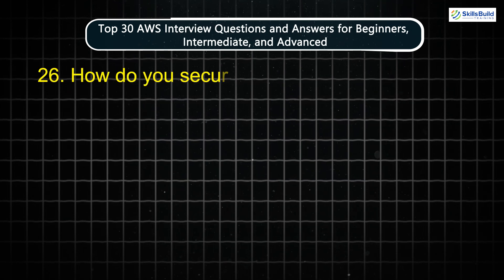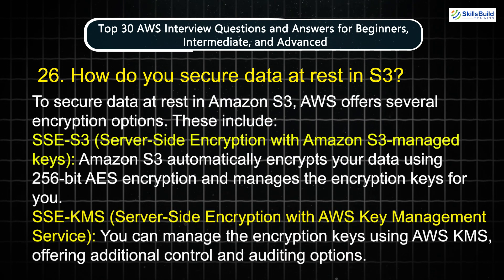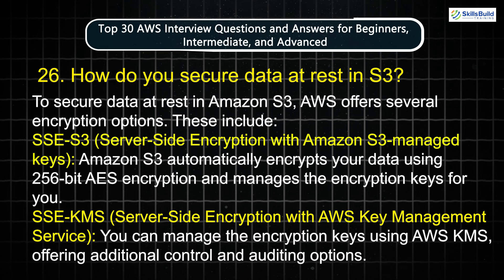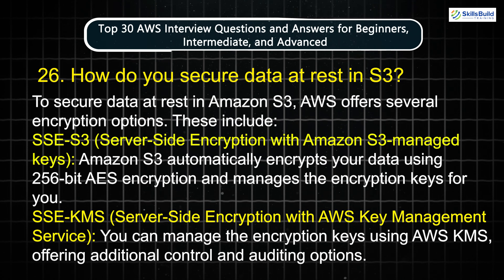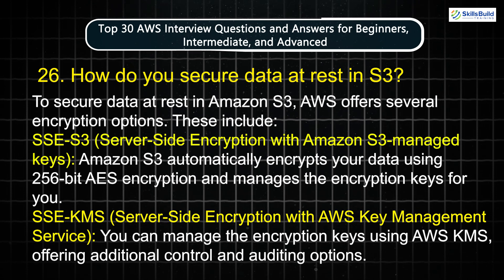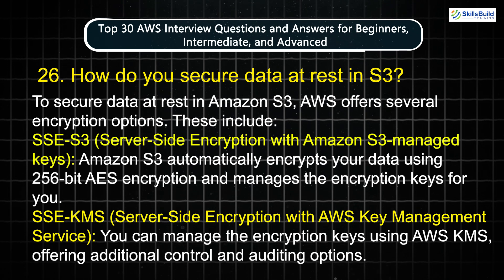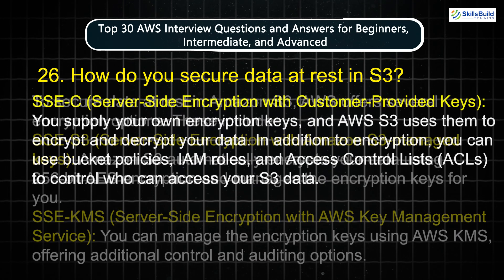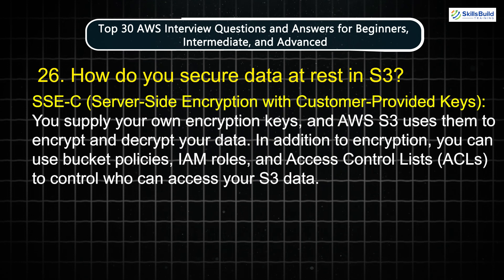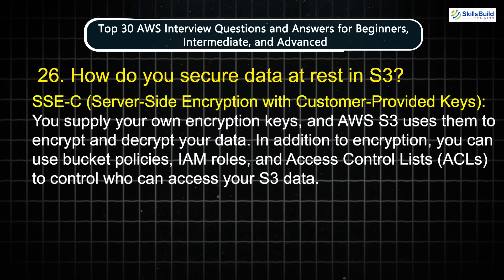Question 26: How do you secure data at rest in S3? To secure data at rest in Amazon S3, AWS offers several encryption options. These include SSE-S3, server-side encryption with Amazon S3 managed keys, where Amazon S3 automatically encrypts your data using 256-bit AES encryption and manages the keys for you. SSE-KMS uses server-side encryption with AWS Key Management Service, giving you additional control and auditing options. SSE-C, server-side encryption with customer-provided keys, allows you to supply your own encryption keys, which AWS S3 uses to encrypt and decrypt your data.